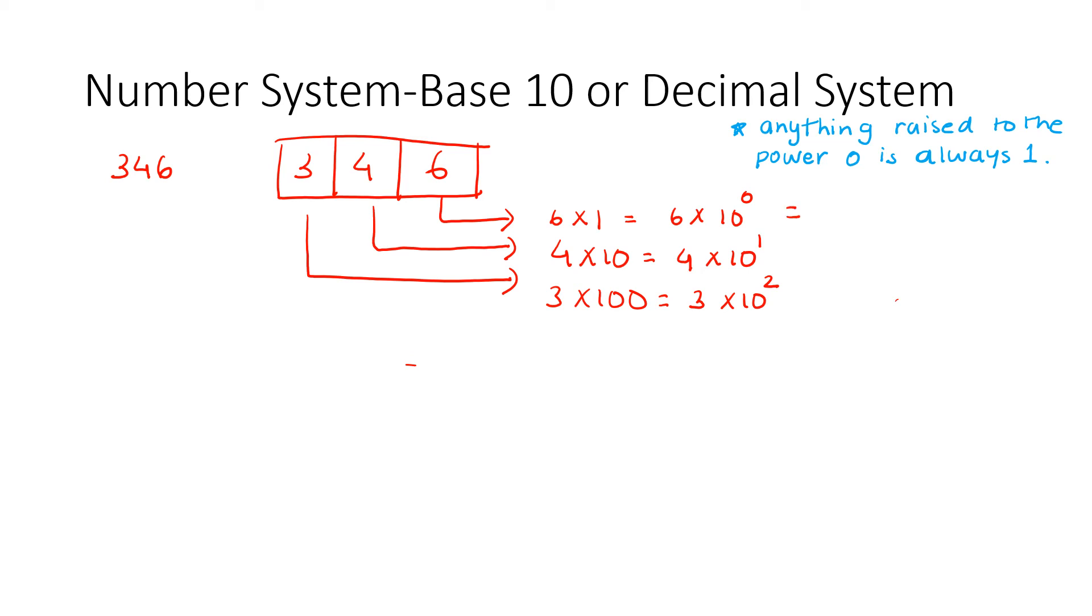Now when I simplify these, 6 into 1 is basically 6, 4 into 10 is 40. And 3 into 10 raised to power 2, which simplifies to 100, would be 300. And when I add these up, we got 346.